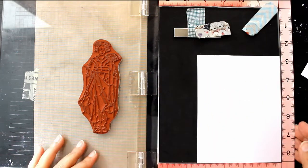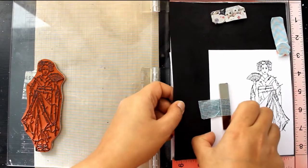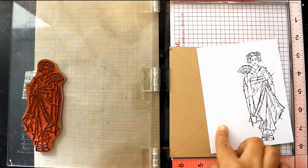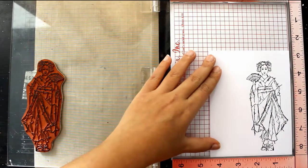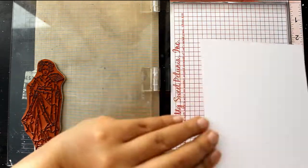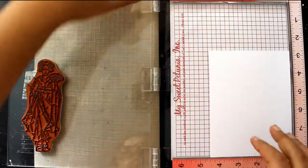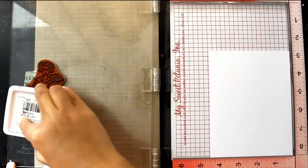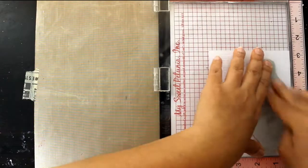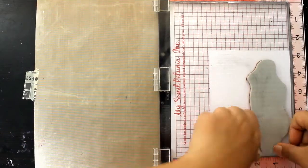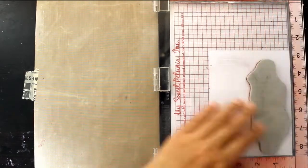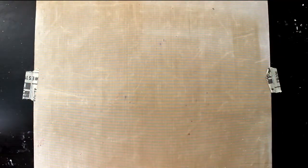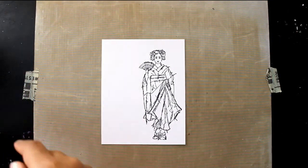This is where you see me make a mistake. I forgot to take out the foam pad from my Misti stamping tool, which is what you need to do when you are using red rubber stamps. When you are using photopolymer stamps you can use the foam pad, but when you are using red rubber stamps you need to remove the foam pad because the red rubber stamps are a bit thicker. There you see me do my CPR on my stamp and I am happy with how the image looks.